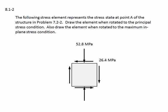Problem 8.1-2. The following stress element represents the stress state at point A of the structure in problem 7.2-2. Draw the element when rotated to the principal stress condition, and also draw the element when rotated to the maximum in-plane stress condition. Here's the element — it was the solution to problem 7.2-2. We have normal stress in the vertical direction in compression, and a shear stress in the negative sense on the element with values given.